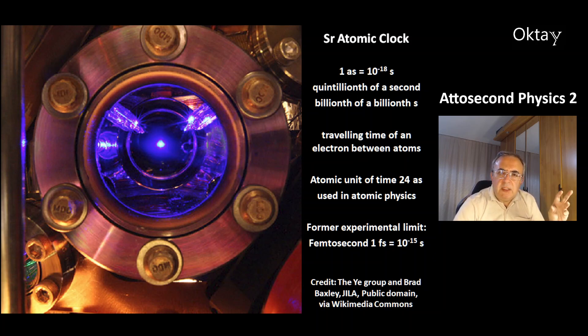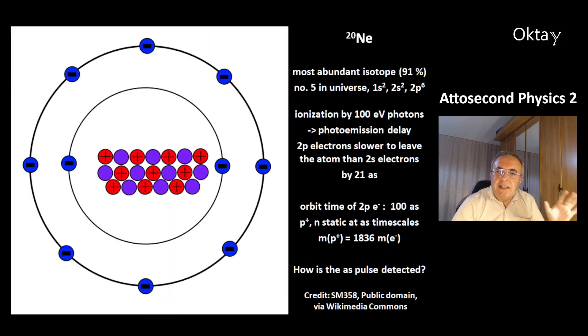The former experimental limit was the femtosecond. One femtosecond is 10 to the minus 15 seconds. This is a simplified model of the element Neon, a nucleus and 10 electrons. Neon is number 5 in abundance in the universe. This Neon-20 is the most abundant isotope with 91% on Earth.